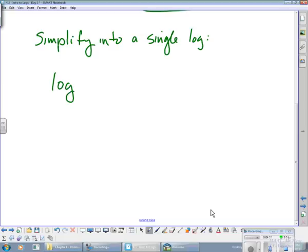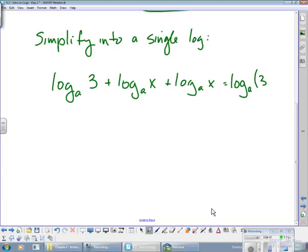So in this case, log base a of 3 plus log base a of x plus log base a of x equals log base a of the quantity 3 times x times x. And then you could obviously simplify that into log base a of 3x squared. And we'll talk more about what happens with exponents later, because that's actually one of the most important factors of logs.